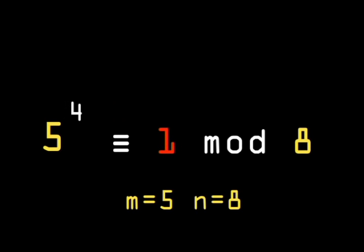Now, when you raise m to the power of phi n, or 4, and divide by n, you will always be left with 1.